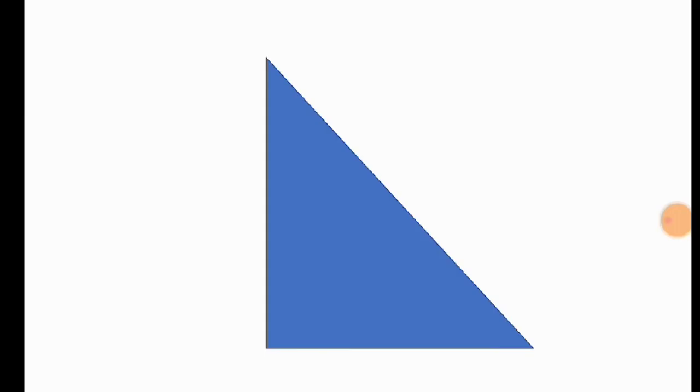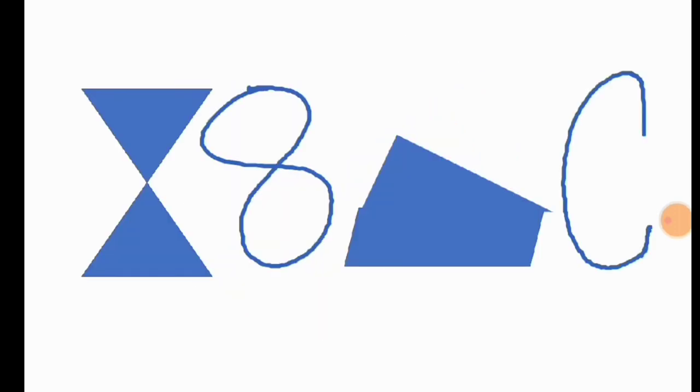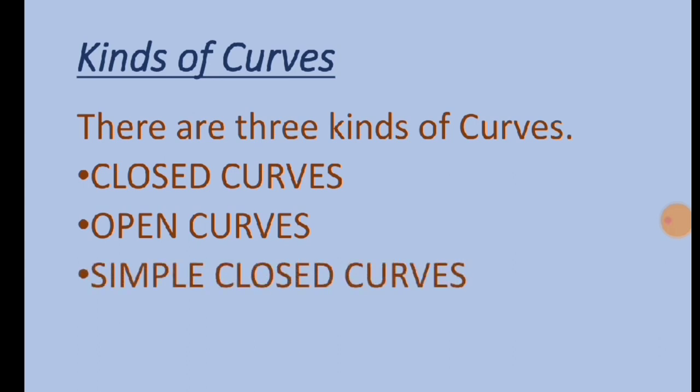A curve can be a triangle, a circle, a straight line, or any closed and open figure. Kinds of curves: There are three kinds of curves. They are closed curves, open curves, and simple closed curves. Let us know one by one about them.